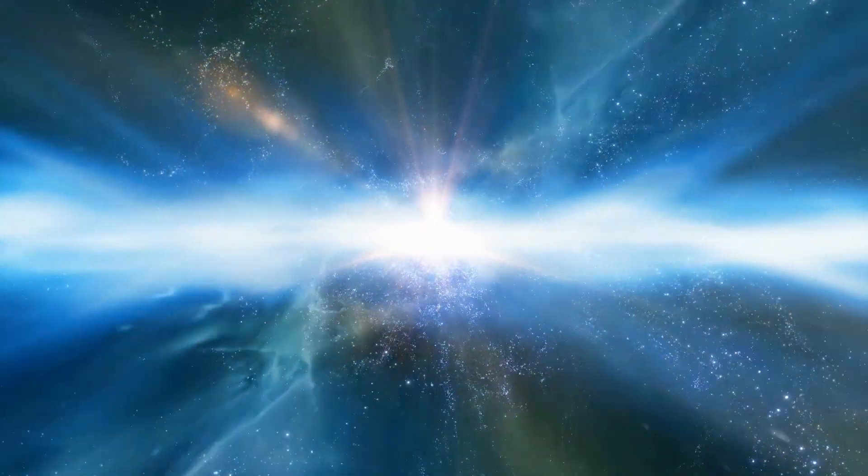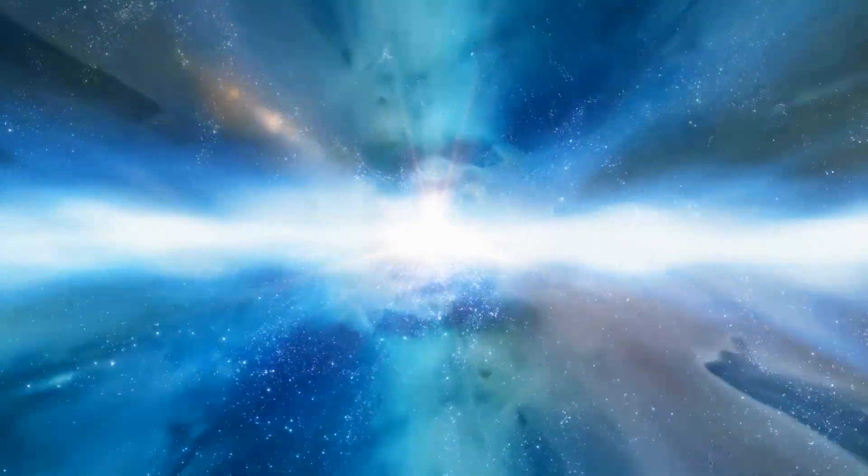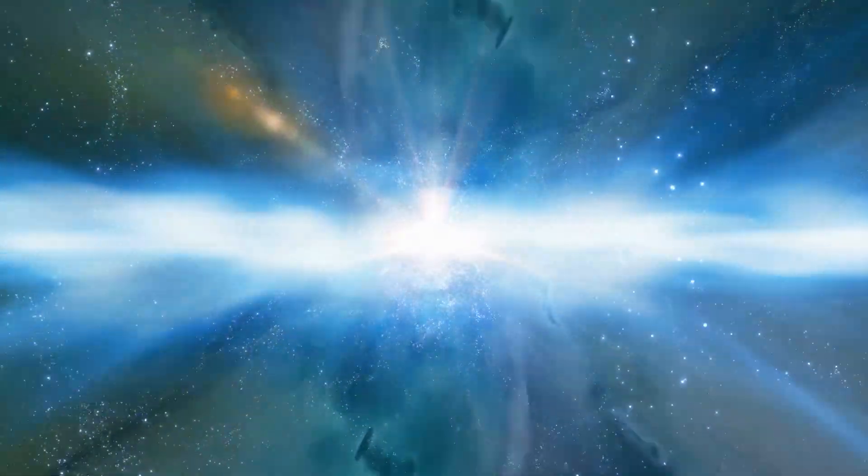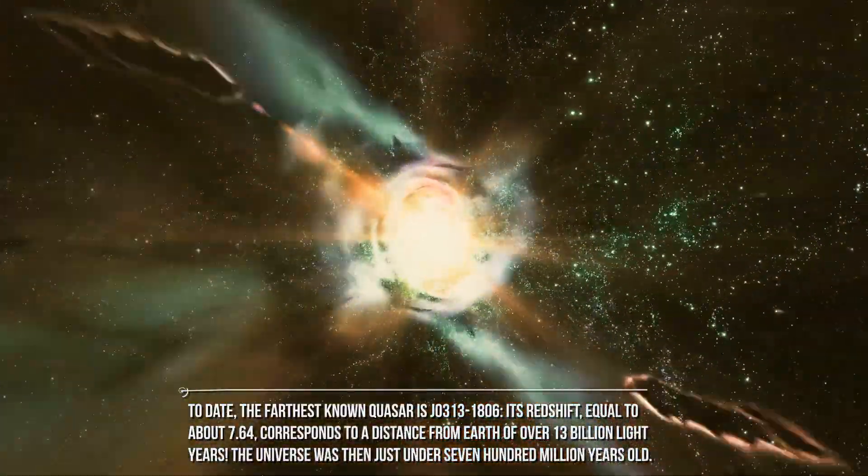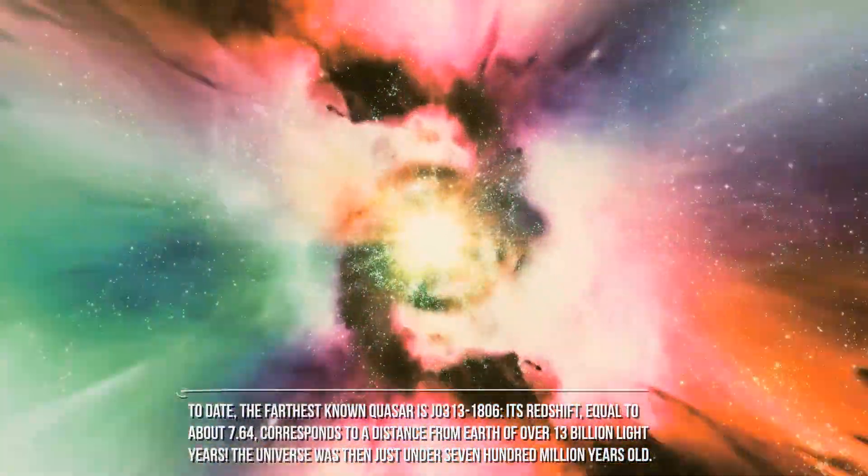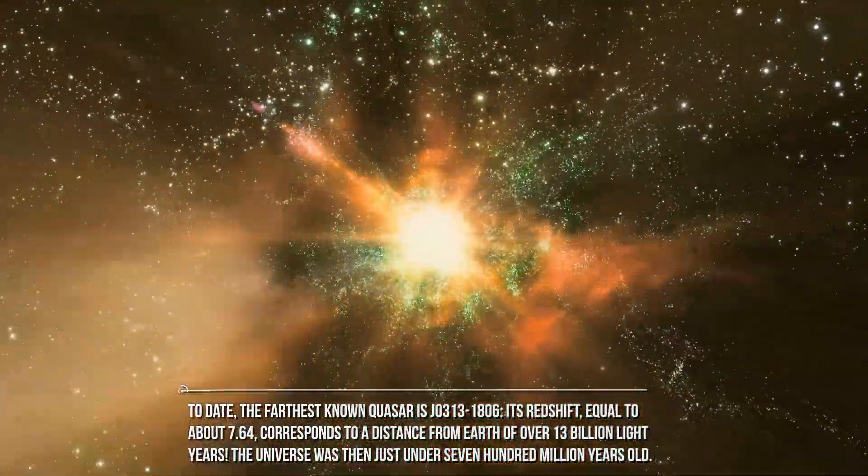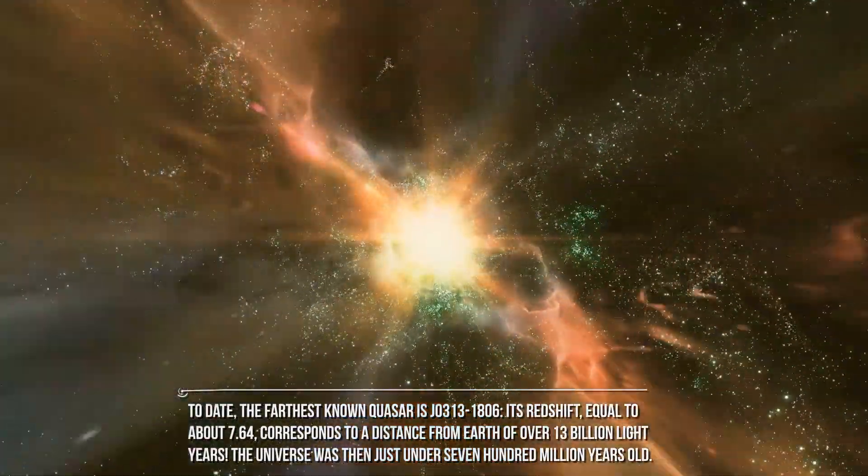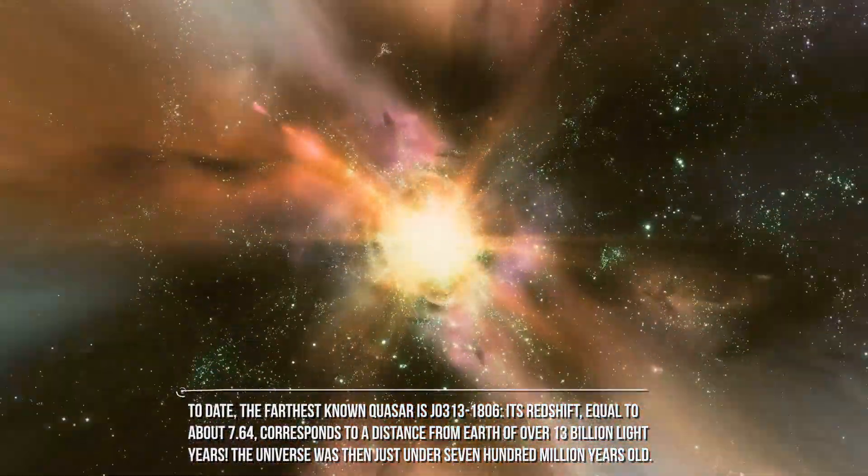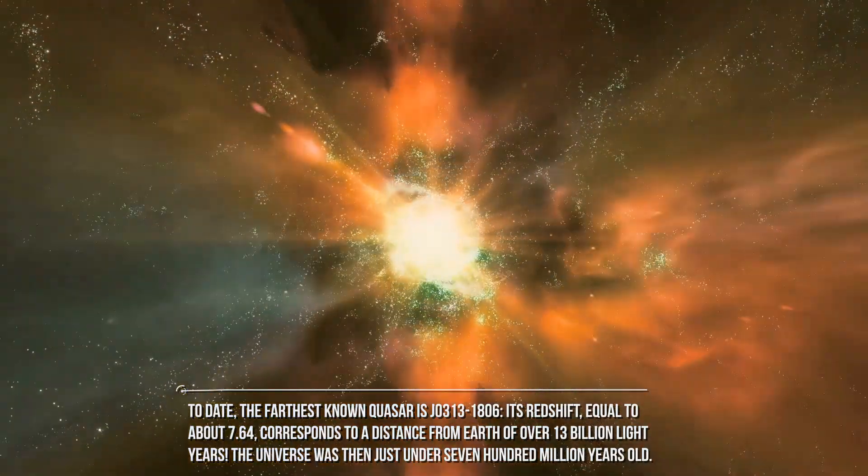But despite the brightness due to the great distance from Earth, no quasar can be seen with the naked eye. To date, the farthest known quasar is J0313-1806. Its redshift, equal to about 7.64, corresponds to a distance from Earth of over 13 billion light-years. The universe was then just under 700 million years old.